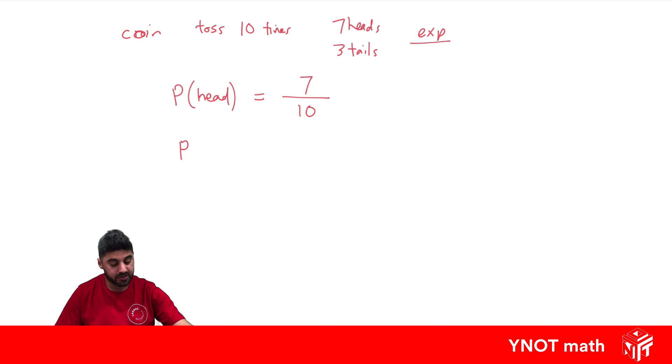What's the probability? What's the experimental probability of getting a tail? Well, again, we tossed it 10 times, and we got 3 heads. So experimental probability of getting a tail is 3 out of 10.